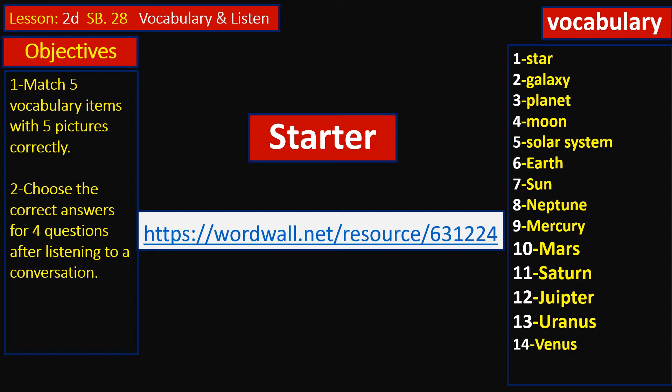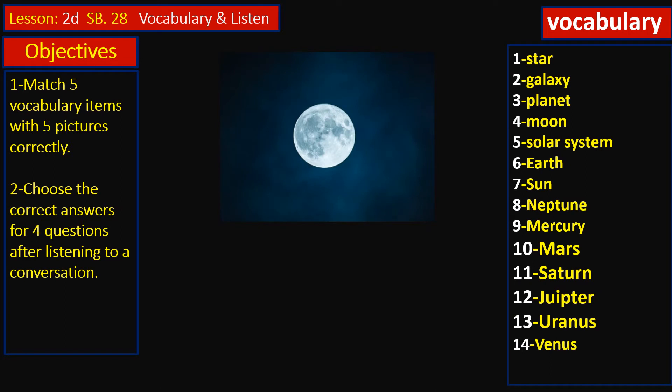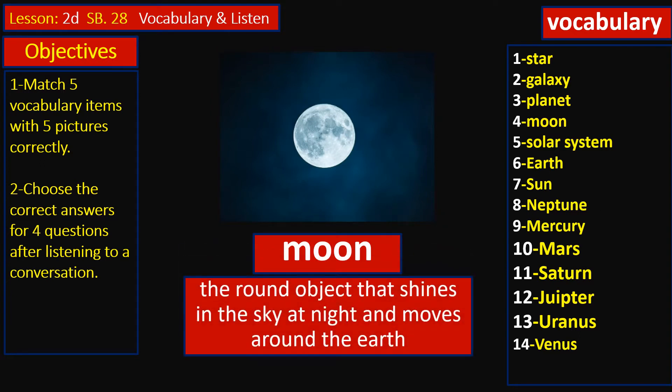Now start. Have a look at the first picture. What can you see? That's right, moon. A moon is a round object that shines in the sky at night and moves around the Earth. That's what we mean by moon.